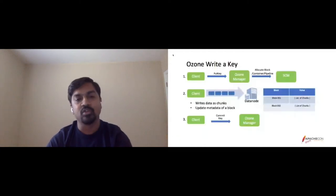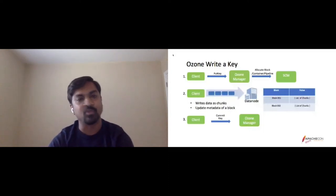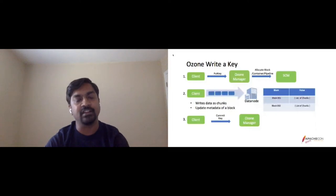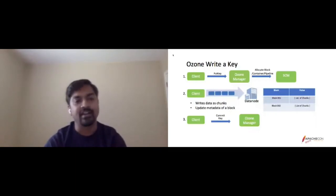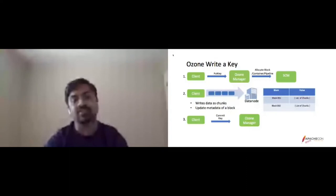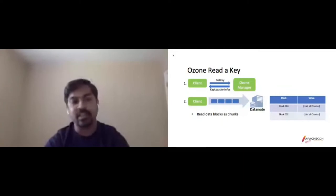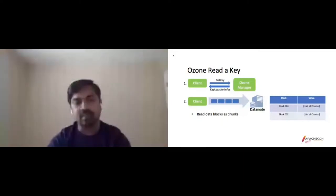The write path in Ozone is similar to HDFS. A client calls put key on Ozone Manager, which has pre-allocated block and container pipeline combinations from SCM. Ozone Manager shares those allocated blocks with the client, which then talks directly to the data node, writes data as chunks, and updates metadata. Once done, the client notifies Ozone Manager to close the file. The read path is similarly straightforward: the client requests a key from Ozone Manager, receives the key location info, then reads data blocks directly from the data node as chunks.